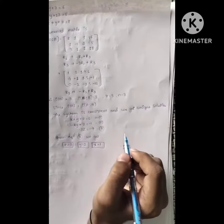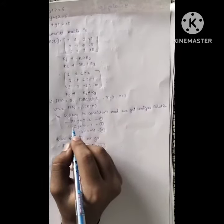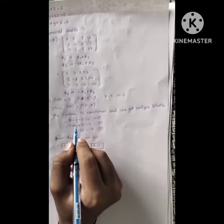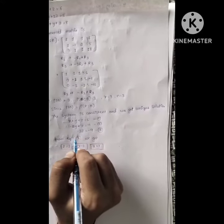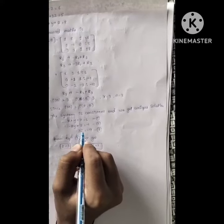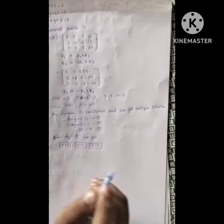The equations become x plus y plus z equal to 6, and minus 2y plus z equal to minus 1, minus 3z equal to minus 9.